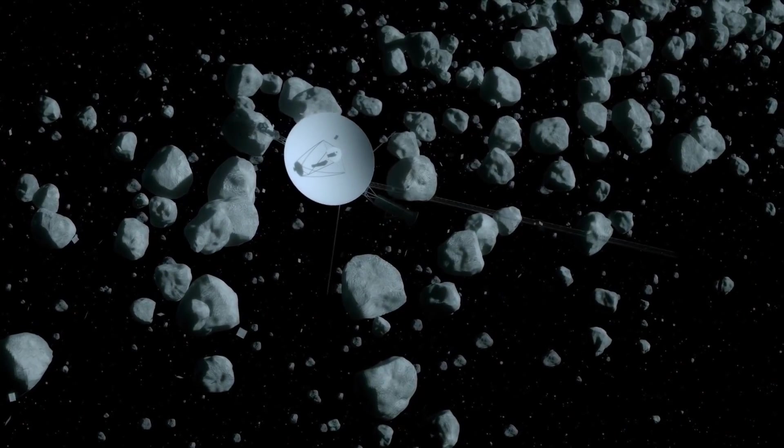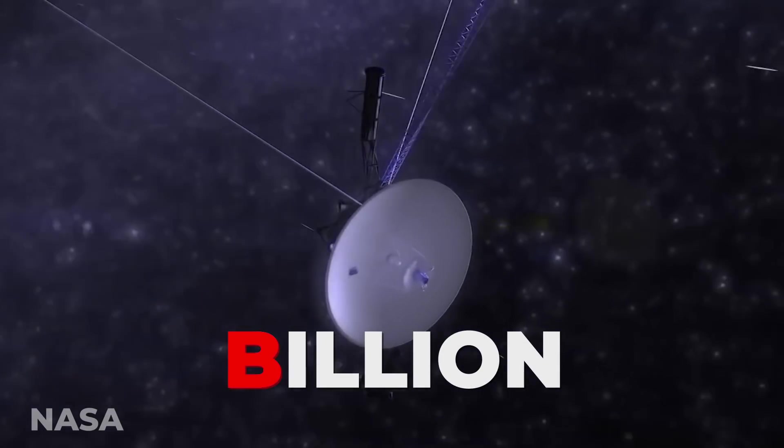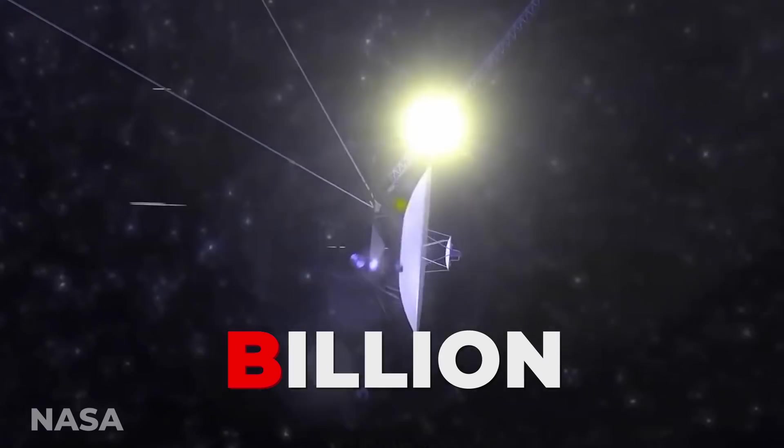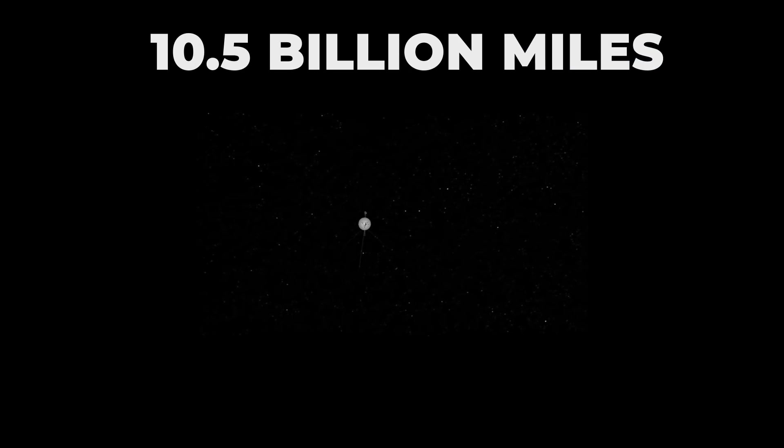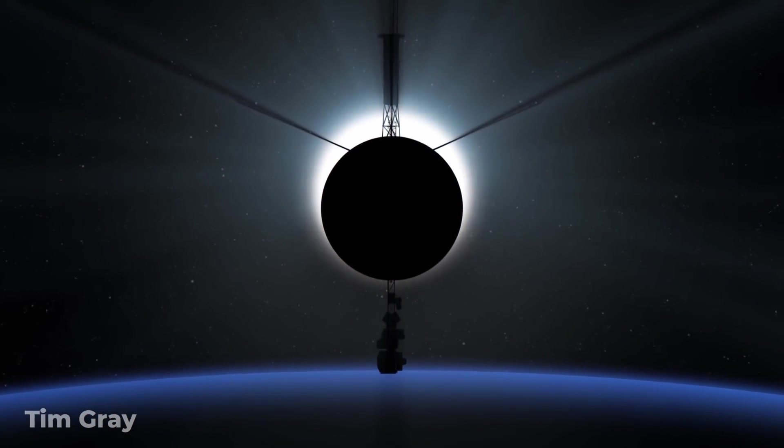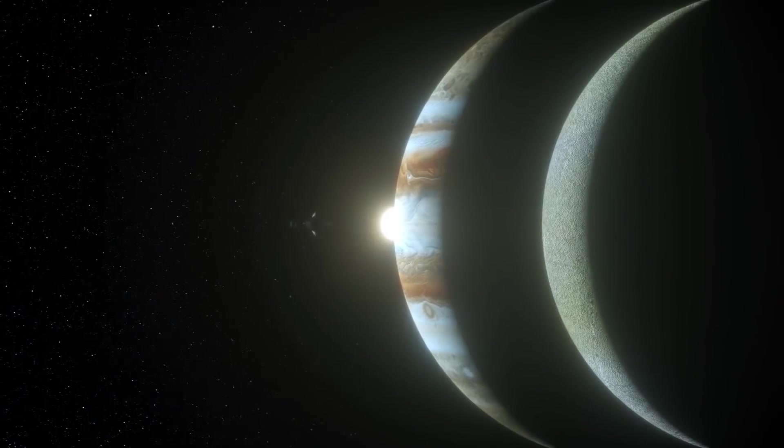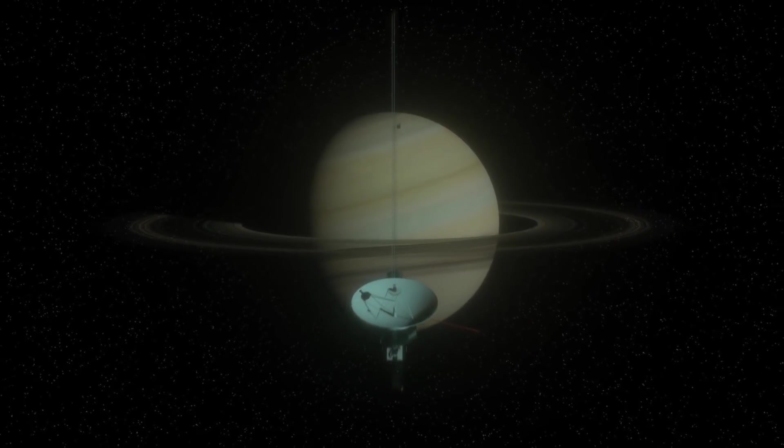Right now, Voyager 1 is 12 billion miles away from Earth, while Voyager 2, on a totally different trajectory, is 10.5 billion miles away. At this distance, it takes nearly two days just to communicate with them. That's just how far away these vessels have gone, and they're not done yet.